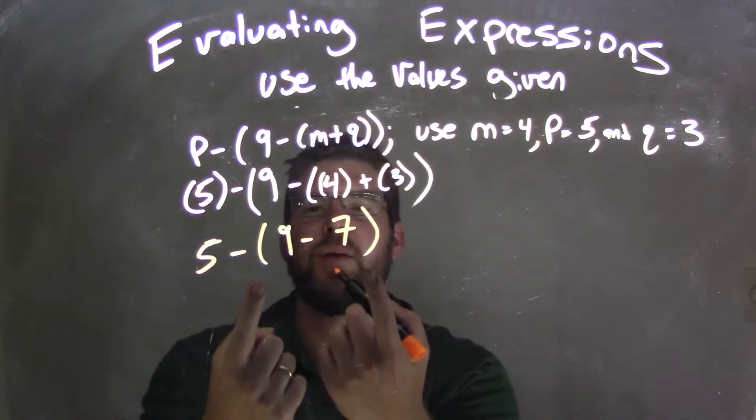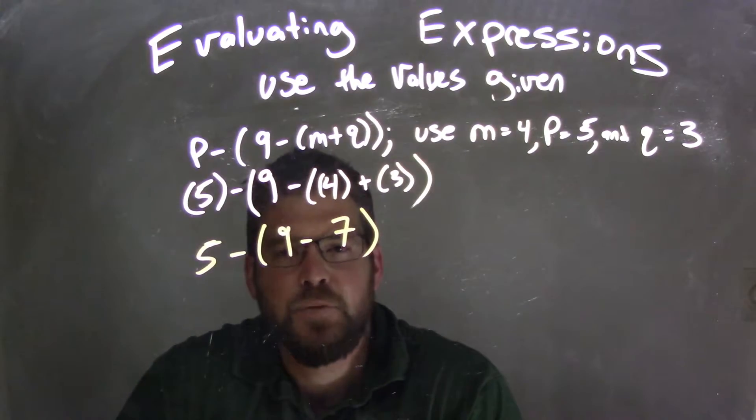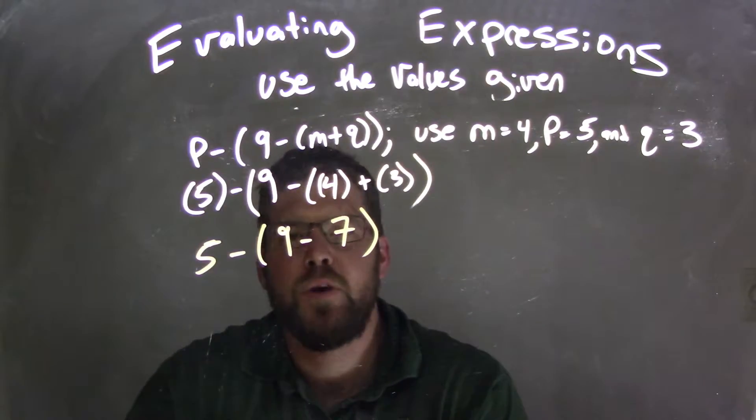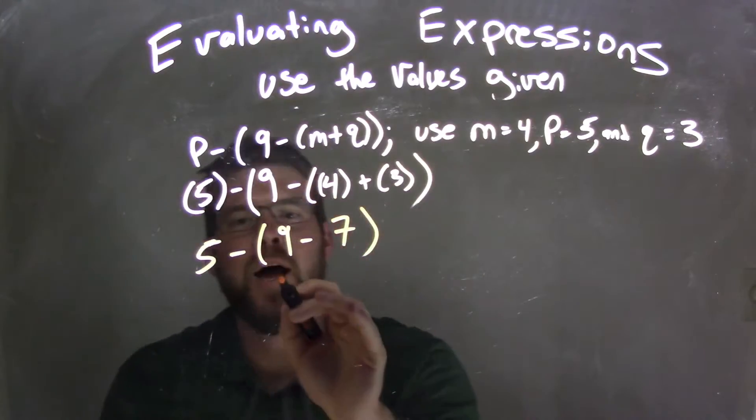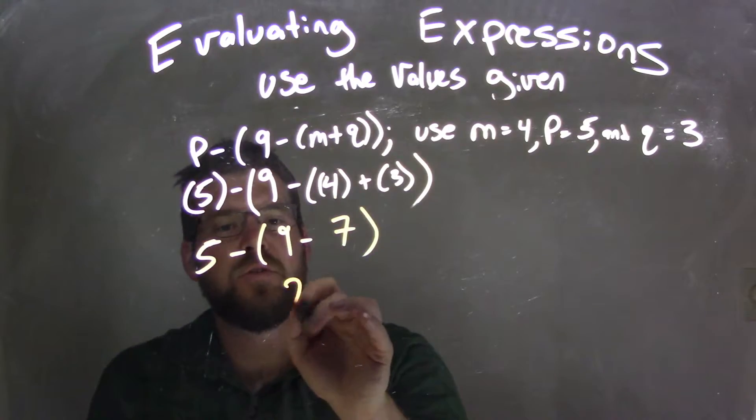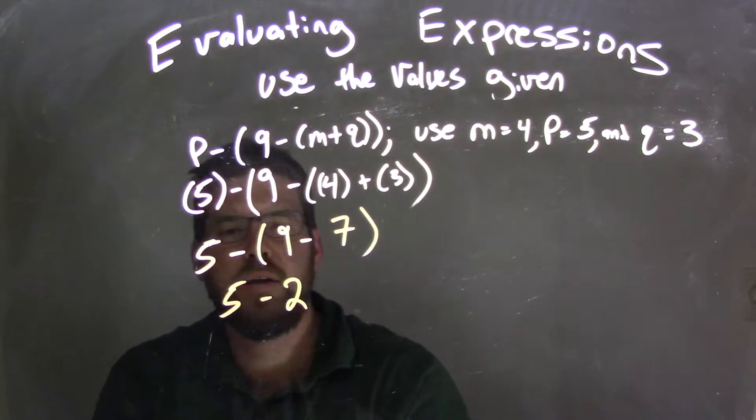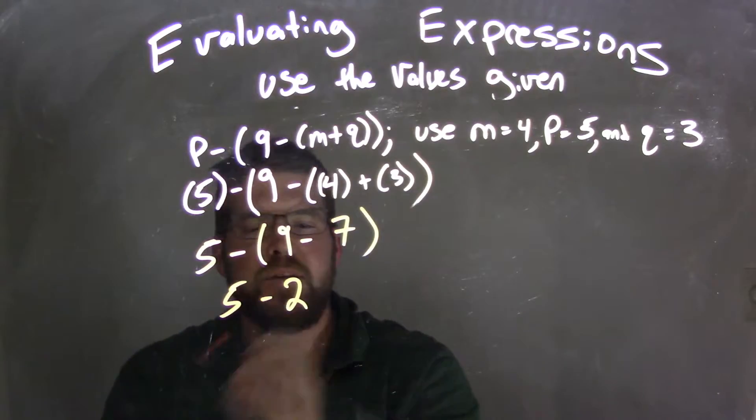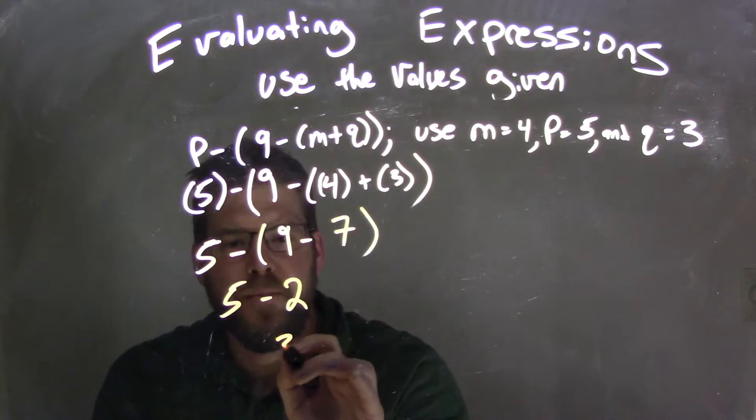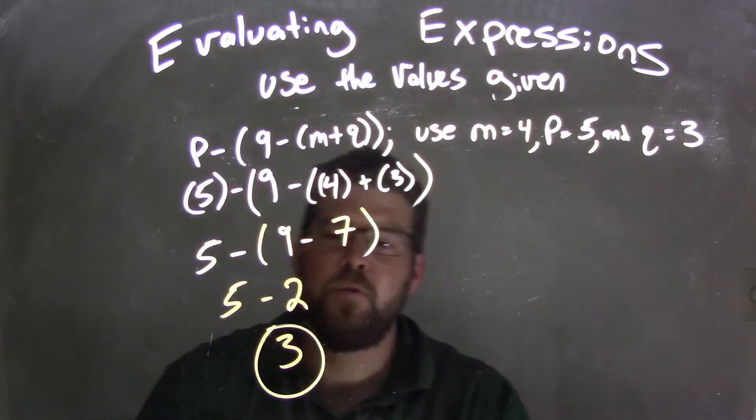So now we have this set of parentheses right there, and we need to subtract inside of there first. We have 9 minus 7 comes first, so 9 minus 7 comes out to be 2, 5 comes out, and lastly, 5 minus 2 is 3, and 3 is my final answer.